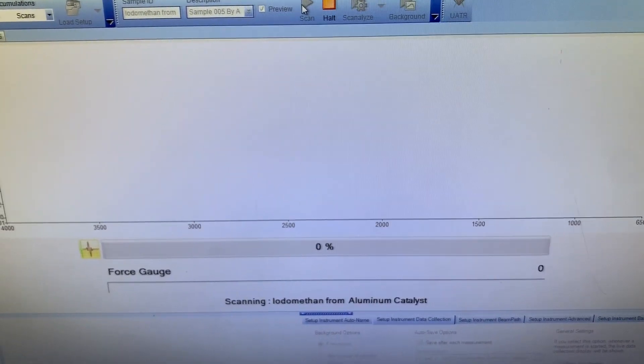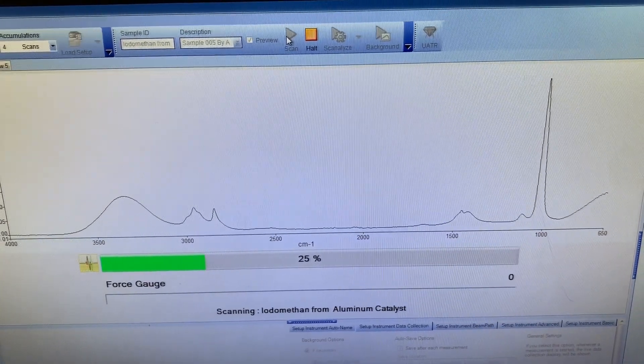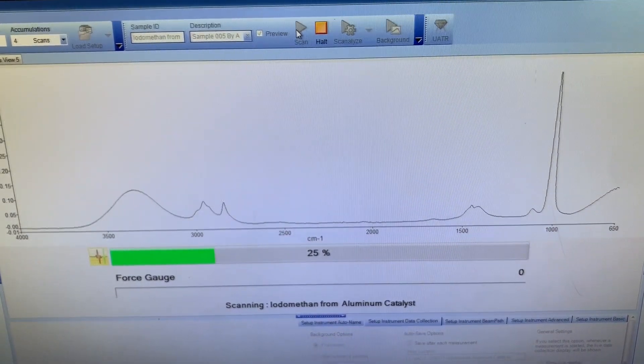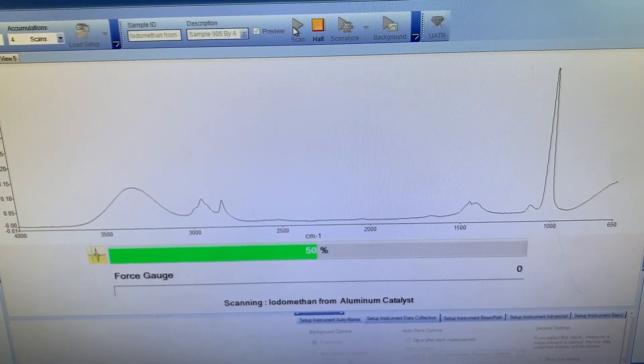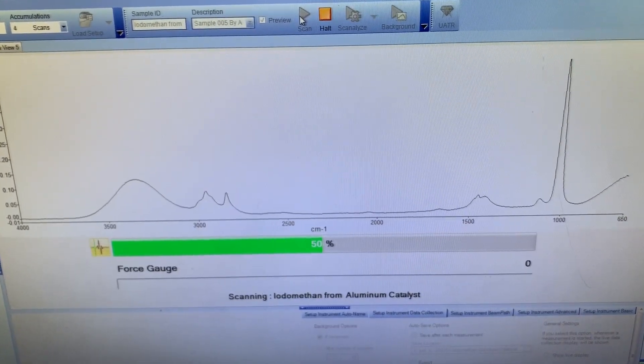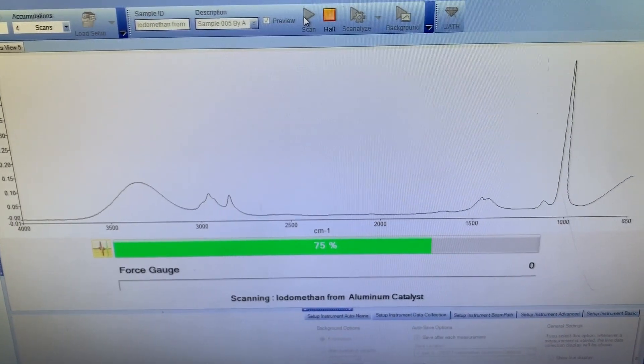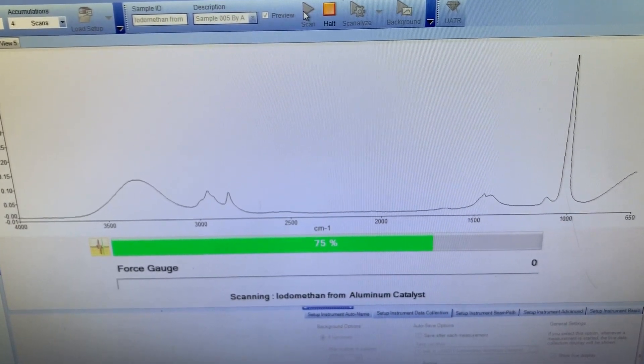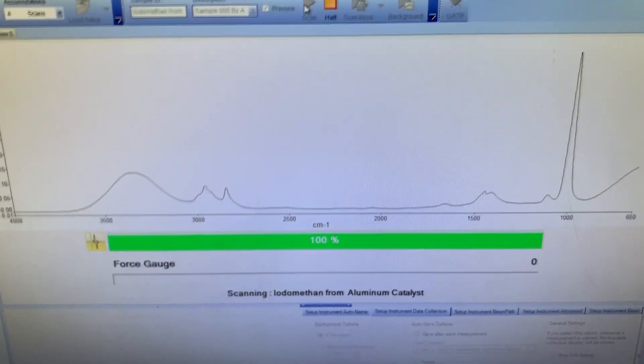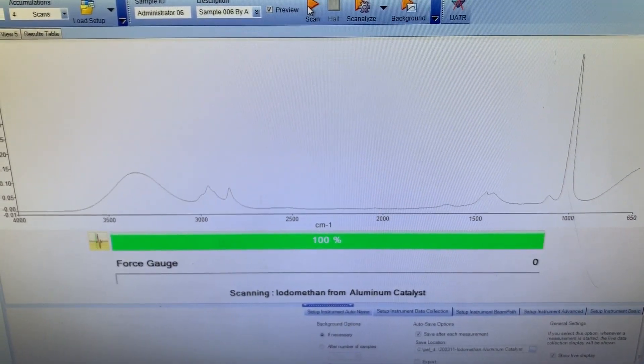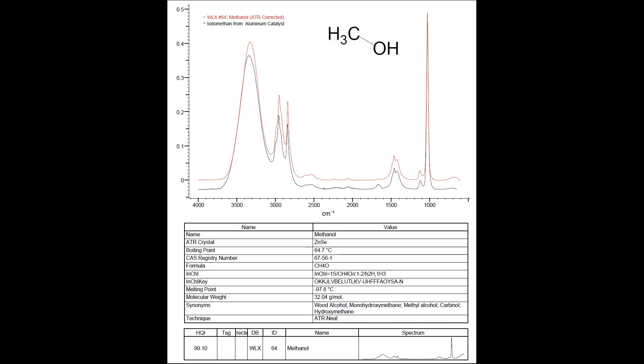FTIR is not the most sensitive analysis that can be done, but it's quick and fairly effective at identifying materials. Once complete, I can search against the database. What this tells me is that my distillate is mainly comprised of methanol, which is the entire reason why I went through the aqueous wash prior.